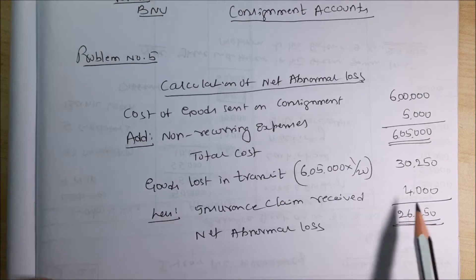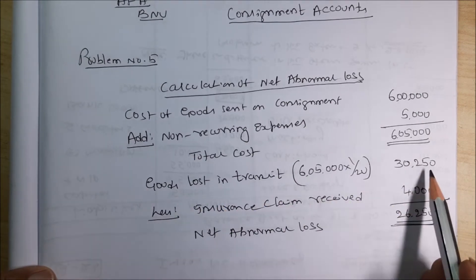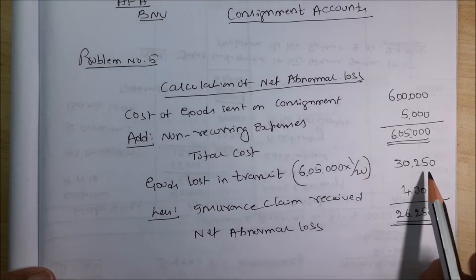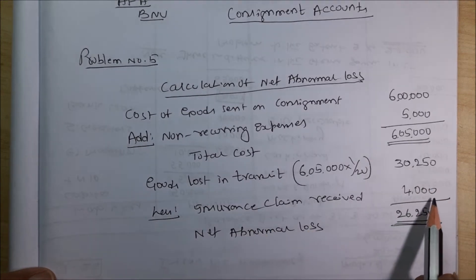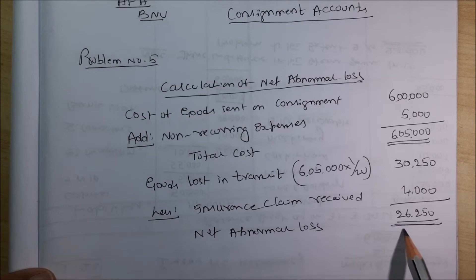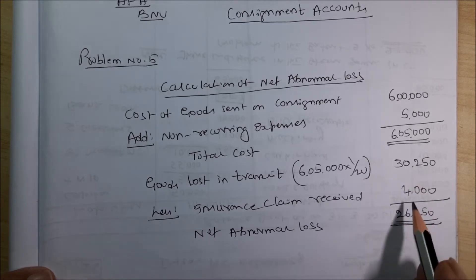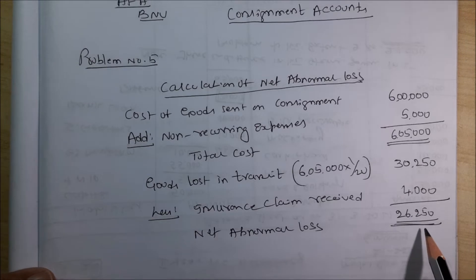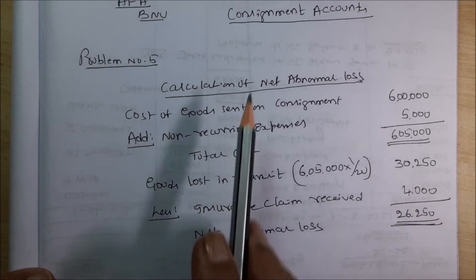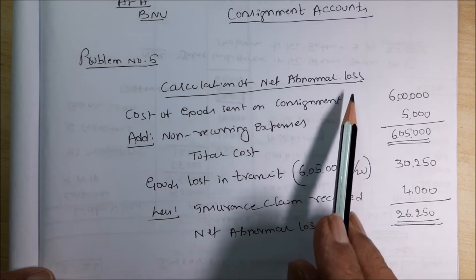The insurance claim received is 4000. The goods lost is 30,250. But you have taken insurance of 4000. So, the net abnormal loss is not 30,250. After deducting insurance, it is 26,250. This is how you work out this problem — the calculation of abnormal loss.